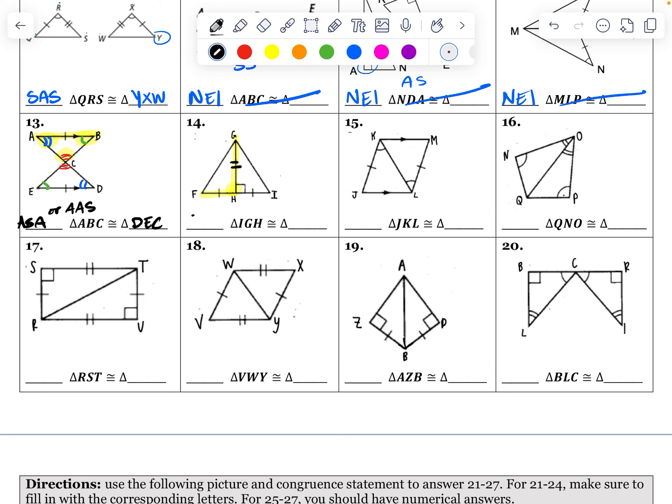So that is side, angle, side, not HL. HL is bad word, or bad word backwards with a right angle. So IGH is going to be congruent to FGH.